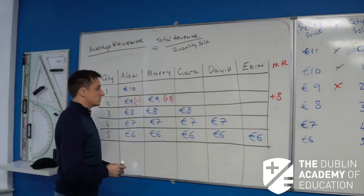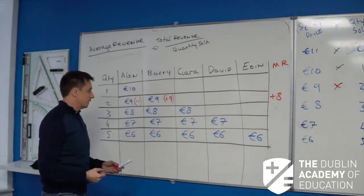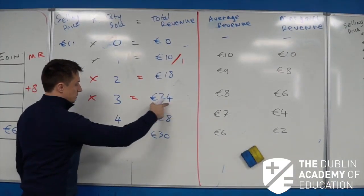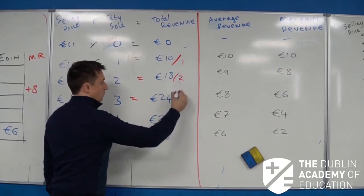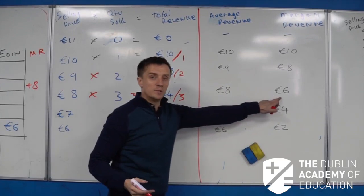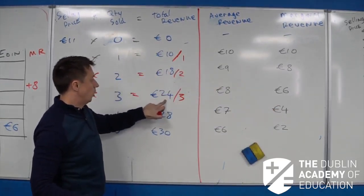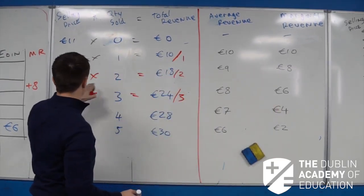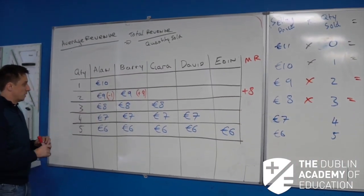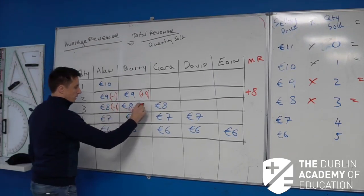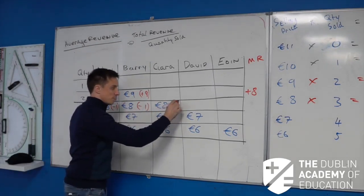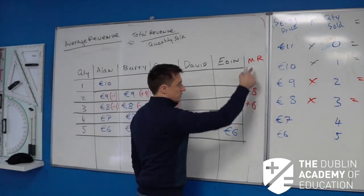The same thing happens across the board. If I decide to sell 3 markers, I drop the price to 8 euro: 8 by 3 is 24. My average revenue is 24 divided by 3, which is 8 euro. However, my marginal revenue is only 6, because my total revenue went from 18 up to 24 — only up by 6. I gain 8 euro from the new sale, but I lose a euro each for Alan and Barry, so minus 2, giving me marginal revenue of 6.